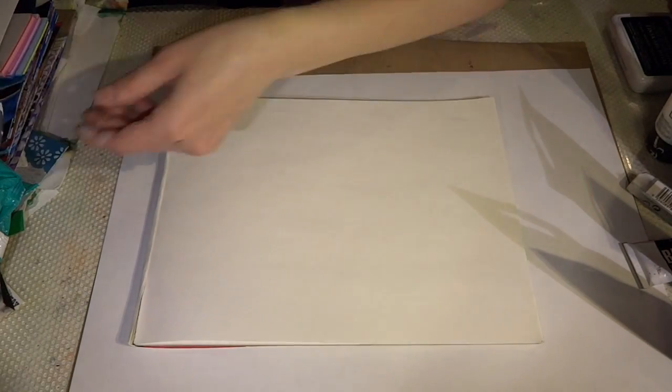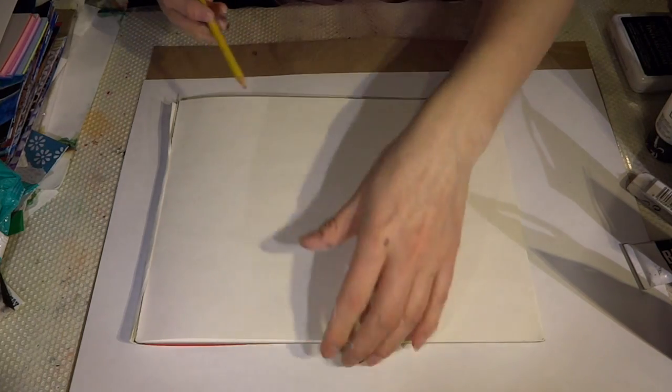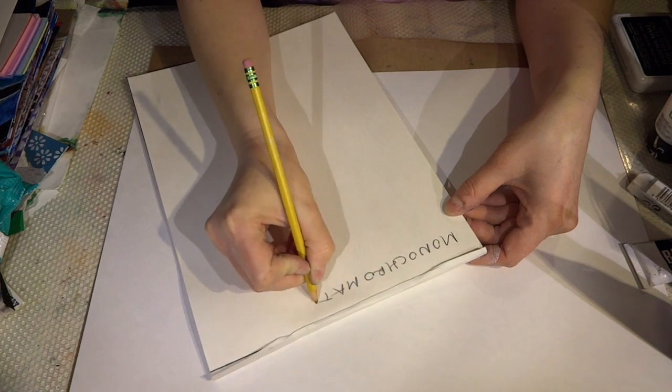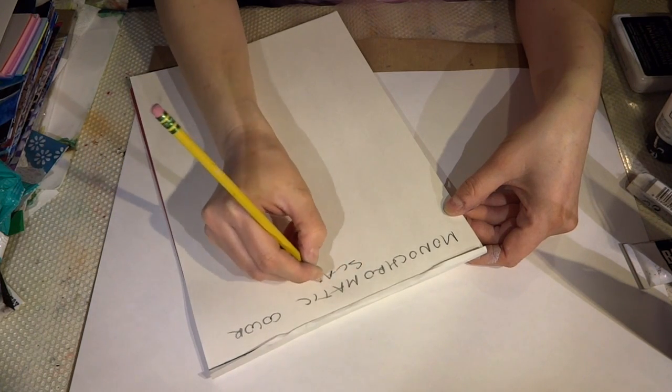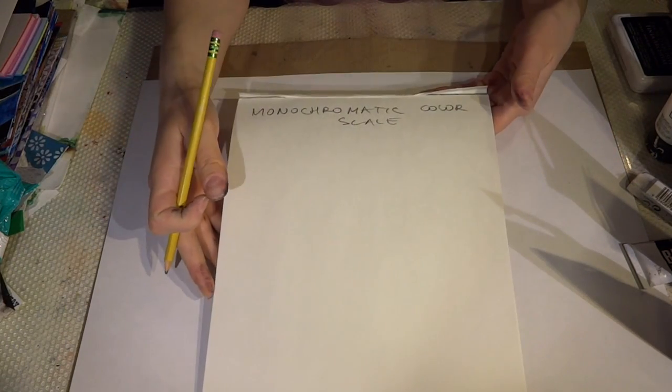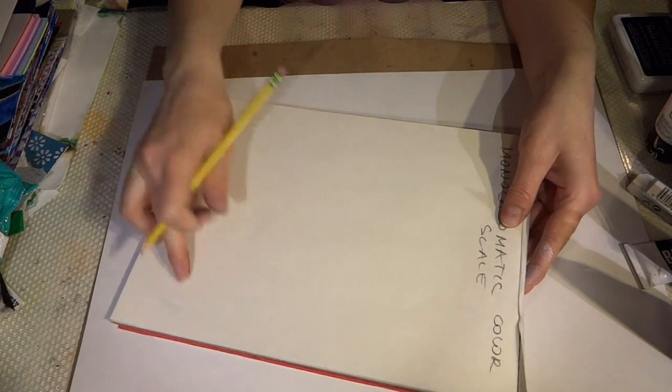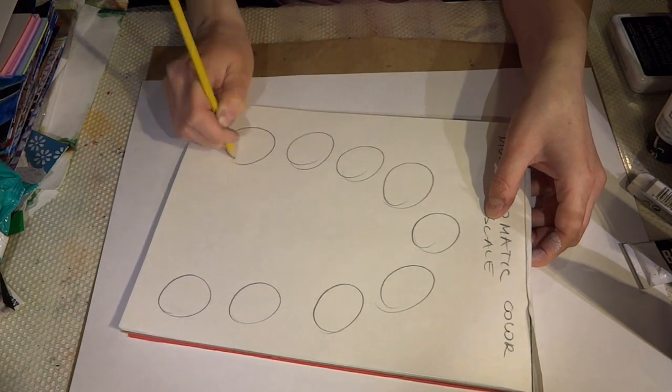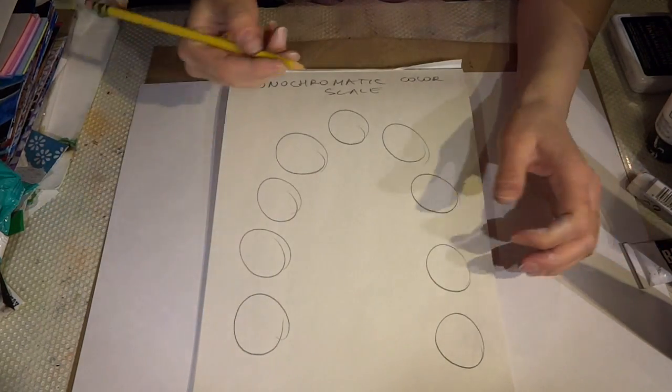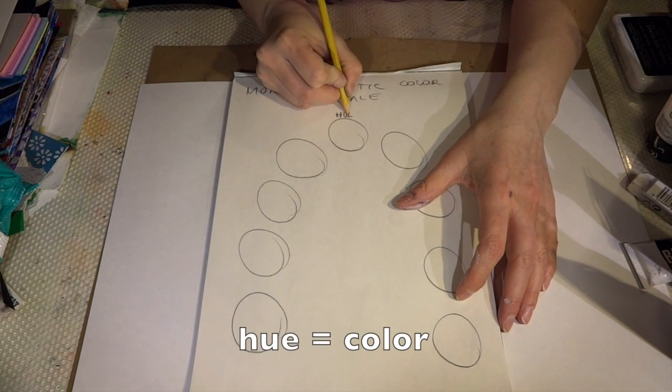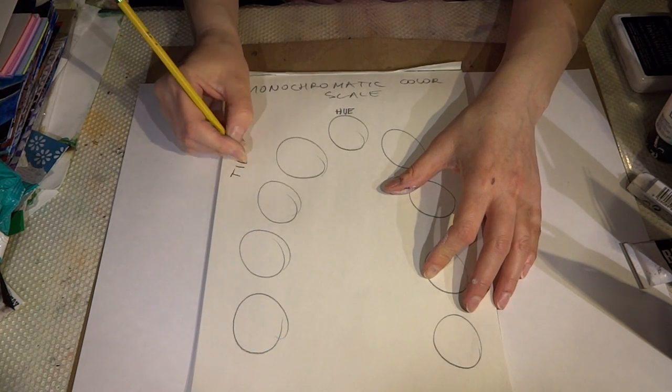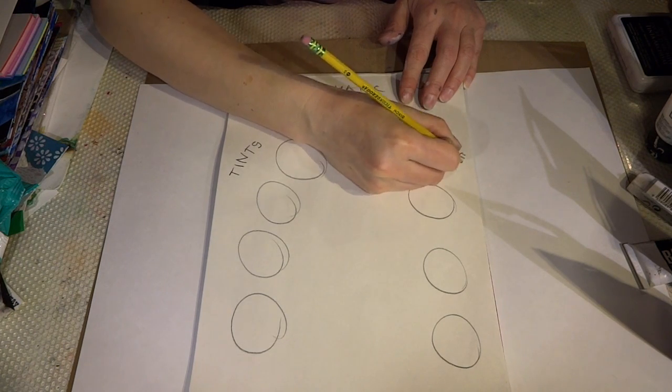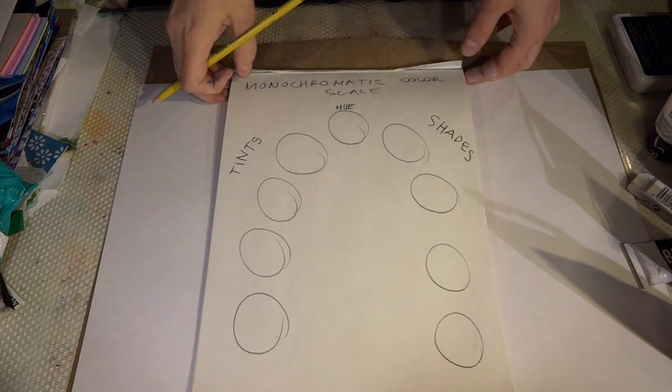What we are going to do first is create a monochromatic color scale in your sketchbook so you figure out how to mix the color lighter and darker. In your sketchbook, I would like you to write monochromatic color scheme or color scale. I'm going to draw nine shapes in a row. You can go in any direction. I'm just going to go in a U shape. This is going to be our pure hue in the middle, H-U-E. On one side we are going to be working with making tints and on the opposite side we are making shades. I hope you guys can read it.